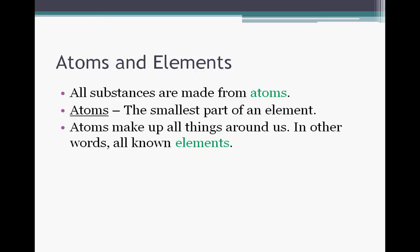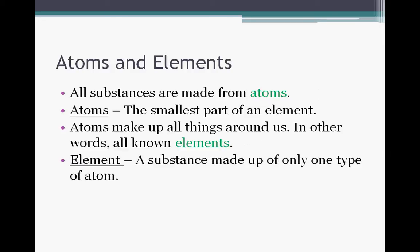Now elements are the things that make everything up around us. They are substances made up of only one type of atom. Each atom is individual and has different properties. Each set of different properties forms a different element. So a single element is an atom that has its own exclusive properties - a substance made up of only one type of atom.